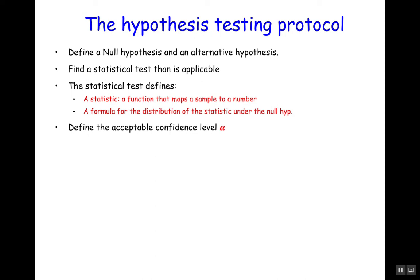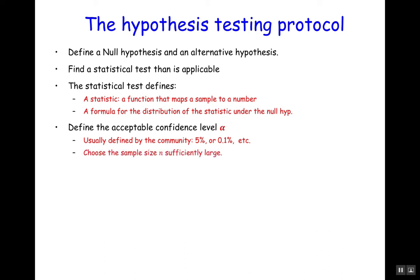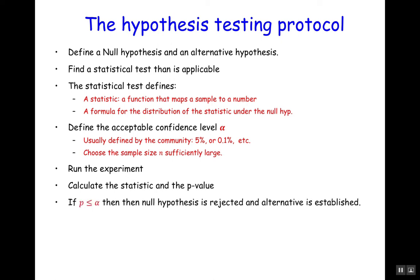Then you define an acceptable confidence level, alpha. This is usually defined by the community or the journals accepting your paper. Common values are 5%, 1%, or 0.1%, depending on the level of confidence the publication requires. Then you choose a sufficiently large sample size, run the experiment, calculate the statistic and the p-value, and check: is the p-value smaller than the a priori decided value alpha? If it is, the null hypothesis is rejected and the alternative is established — you've proven your point.